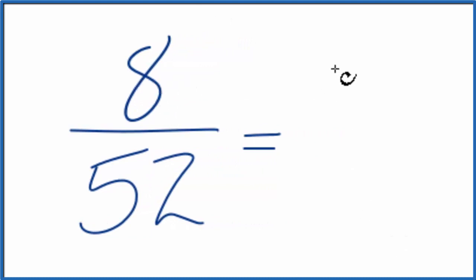So 8 divided by 2 is 4. 52 divided by 2 is 26. So that's a little bit easier to work with, but I can reduce this further.